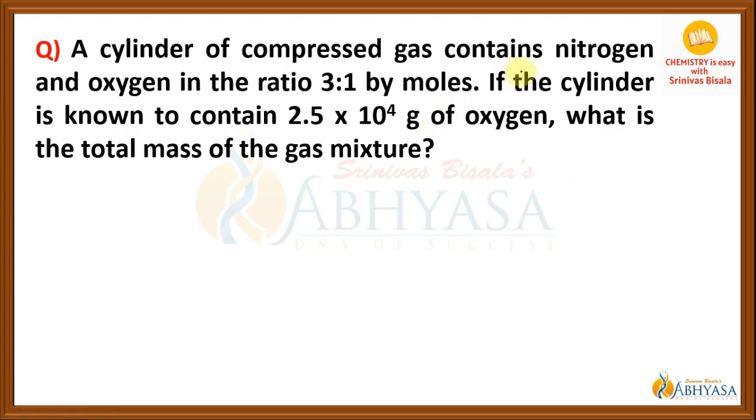A cylinder of compressed gas contains nitrogen and oxygen in the ratio 3 is to 1 by moles. And if the cylinder is known to contain 2.5 into 10 power 4 grams of oxygen, what is the total mass of the gaseous mixture?